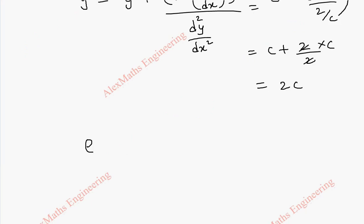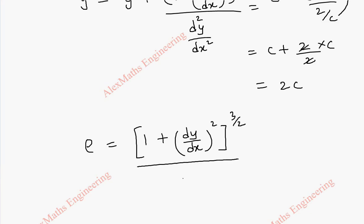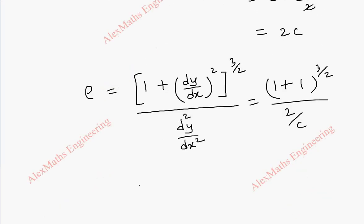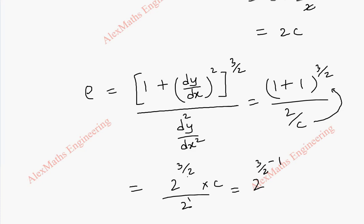Now we find the radius of curvature ρ = (1 + (dy/dx)²)^(3/2) / (d²y/dx²). Substituting dy/dx = −1, so (1 + 1) = 2, we get 2^(3/2) divided by 2/c. Multiplying by c gives 2^(3/2 − 1) · c = 2^(1/2) · c = √2 · c.